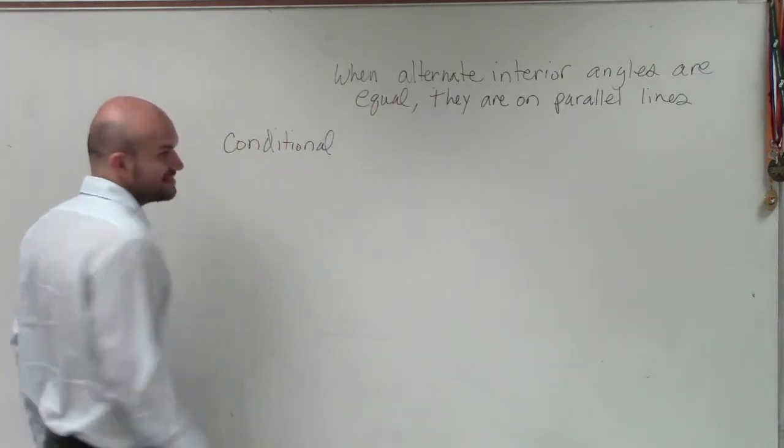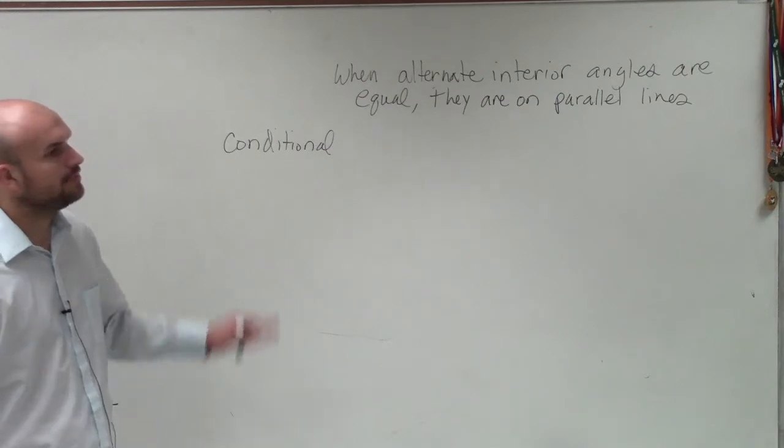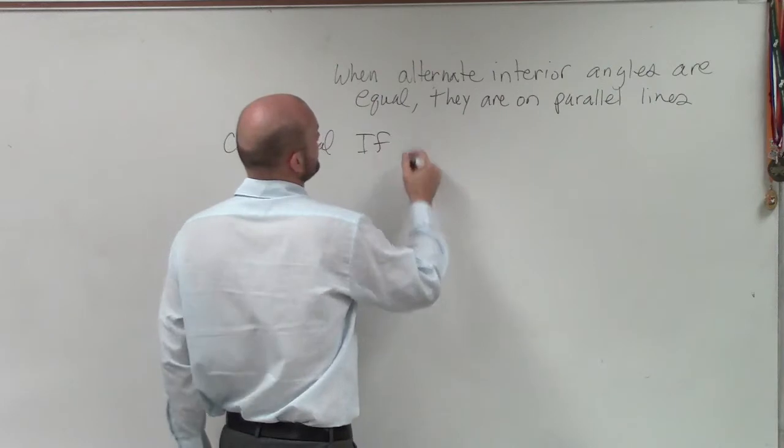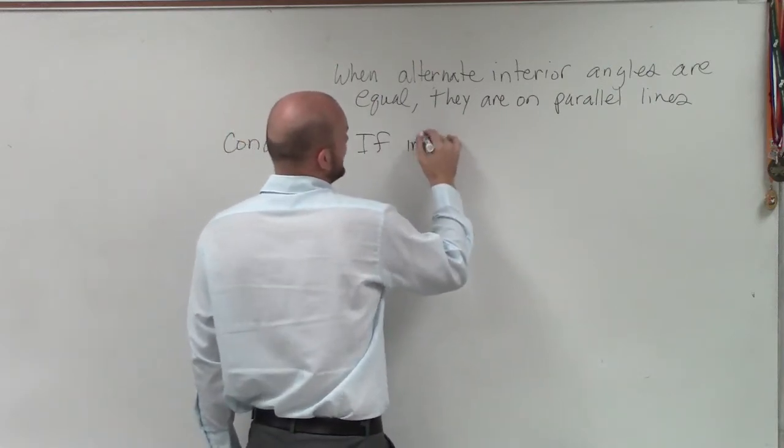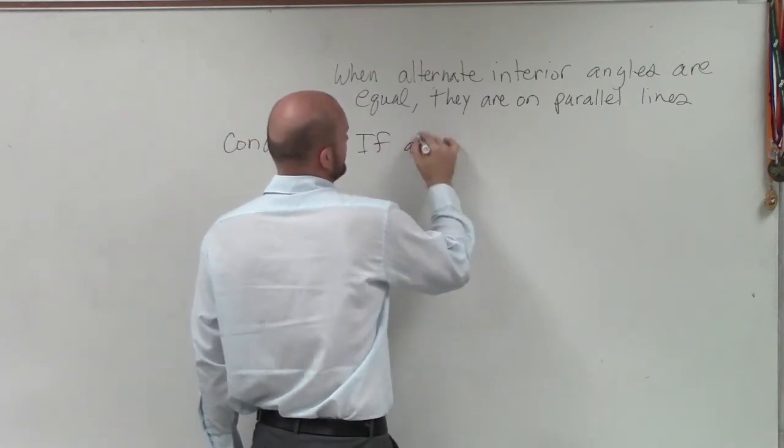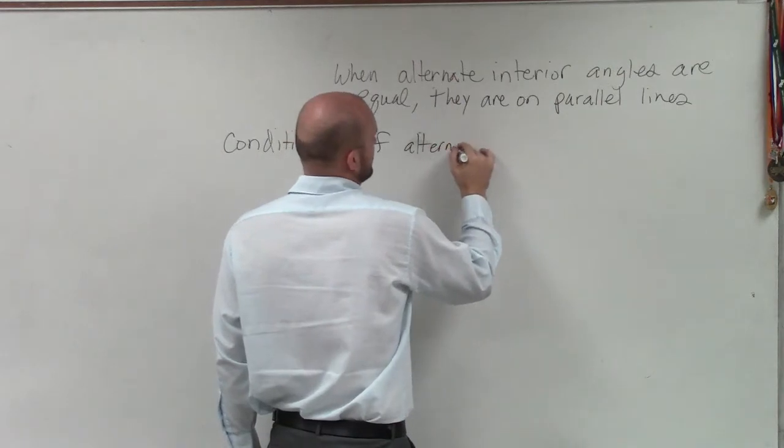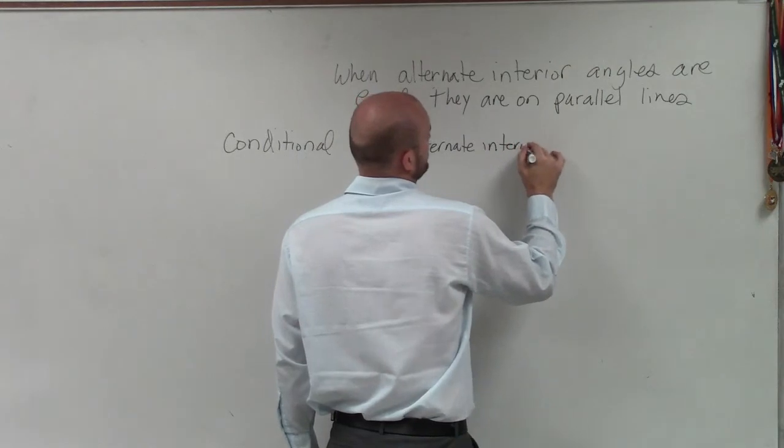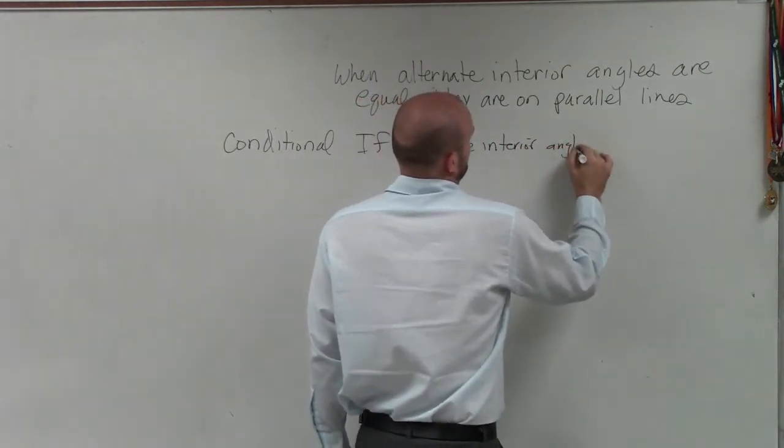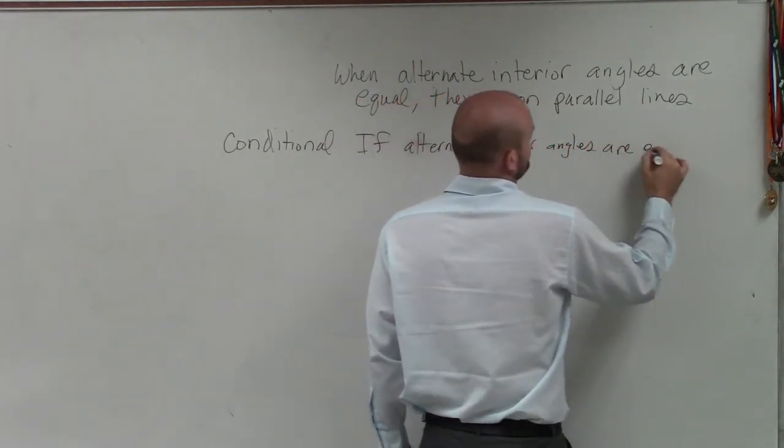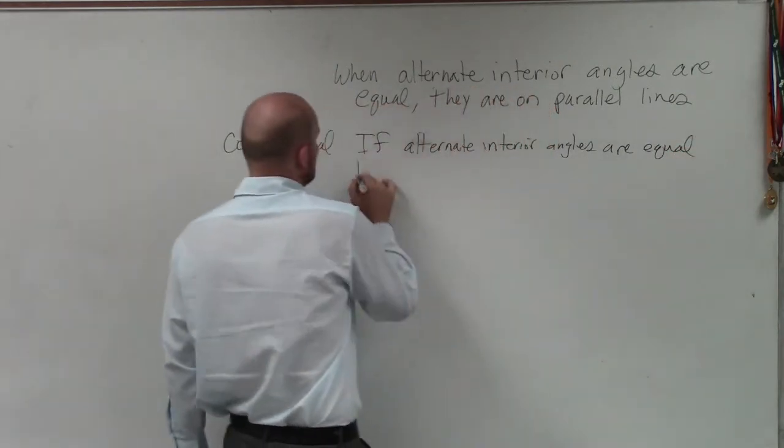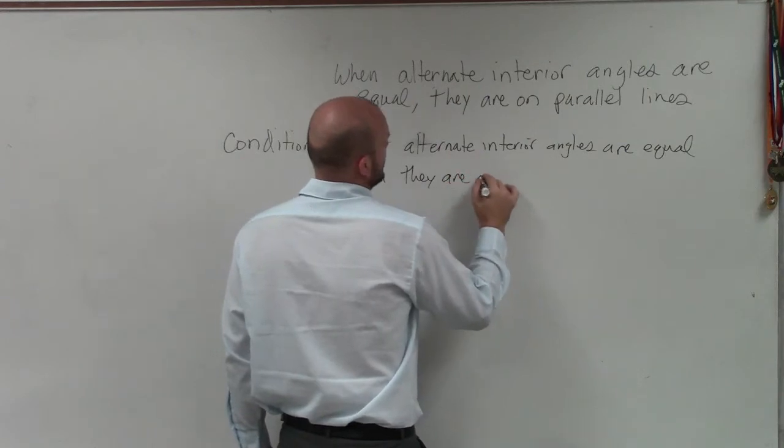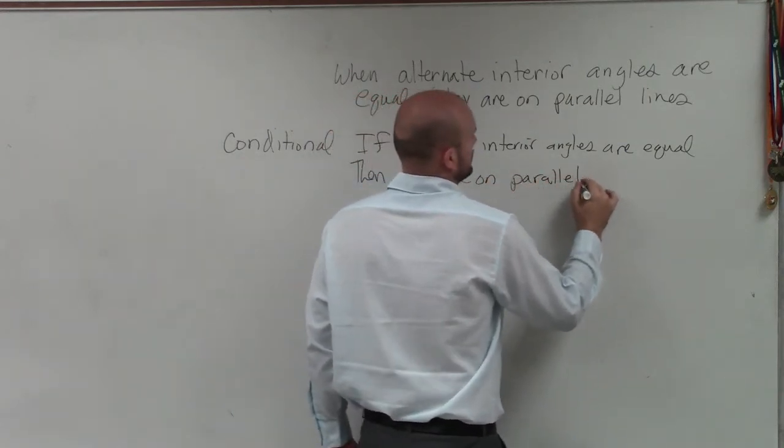So I want to rewrite this in a conditional form. So pretty much, if alternate interior angles are equal, then they are on parallel lines.